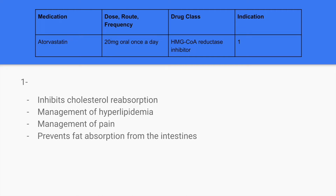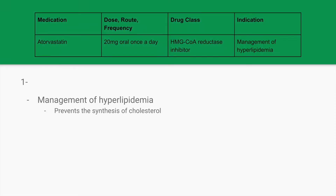The first medication here is atorvastatin. The dose route frequency is 20mg oral once a day. The drug class is HMG-CoA reductase inhibitor, and we are selecting what it is indicated for. The answer is management of hyperlipidemia. Atorvastatin helps to prevent the synthesis of cholesterol, thus treating high fat or high lipid levels in the blood.